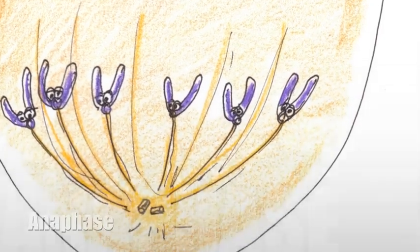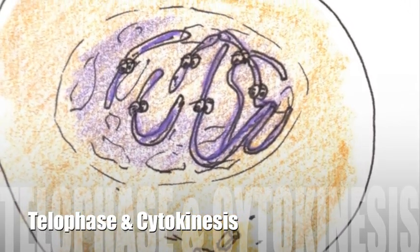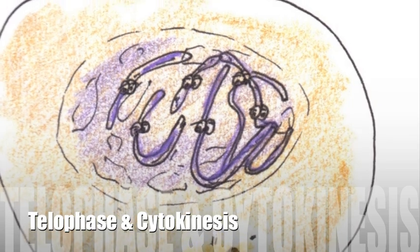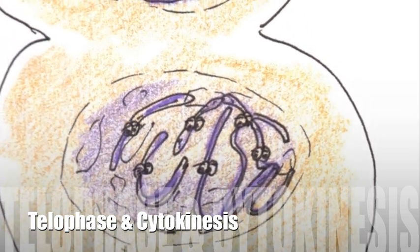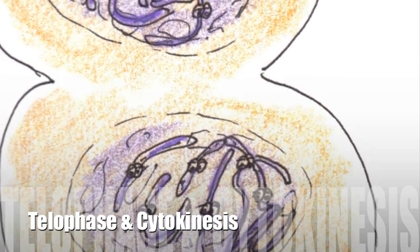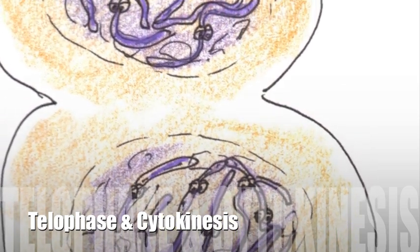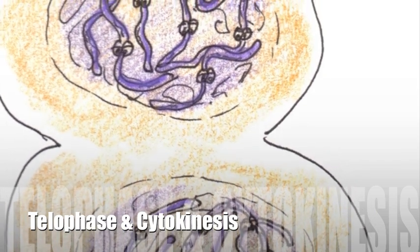Chromosomes begin to retreat. Two cells are about to secrete. In telophase, chromosomes go to the poles. They are ready to fulfill their roles. The nuclear membrane begins to reform. The nucleoli are back, that's the norm. Chromosomes begin to fade. Two identical daughter cells will be made.